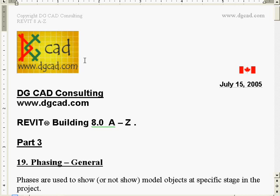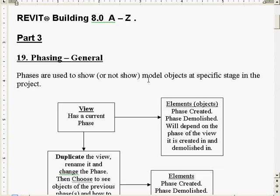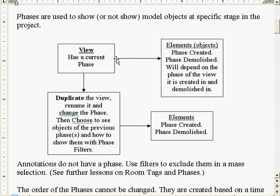Hello and welcome to another DGCAD Revit Building A-Z lesson. We're in Part 3, Lesson 19, which is our first phasing lesson. We're going to do a general overview - we won't cover phase filtering or room tagging with phasing today, but we will talk about phasing in general, and then we'll cover phase filtering in a separate lesson.